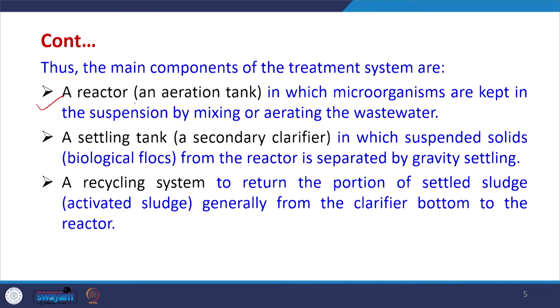The main components of the activated sludge treatment system are: a reactor, which is an aeration tank in which microorganisms are kept in suspension by mixing or aerating the wastewater; a settling tank, which is a secondary clarifier where suspended biological flocs from the reactor are separated via gravitational settling; and a recycling system to return a portion of the settled sludge from the clarifier bottom to the reactor to maintain the required amount of activated sludge.